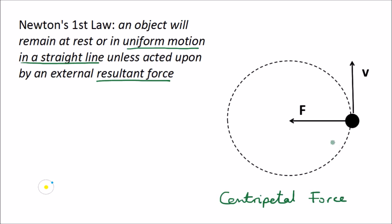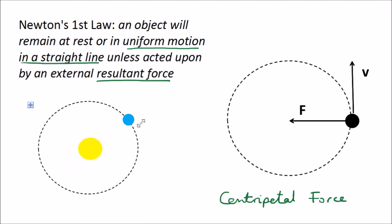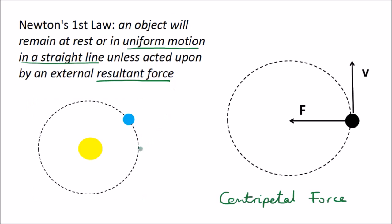For example, if we swing a metal ball in a circle, the tension in the rope or chain would provide the centripetal force. For the Earth orbiting the Sun, the centripetal force is provided by the gravitational pull, and if gravity suddenly turned itself off, the moon would fly off at a tangent in a straight line.